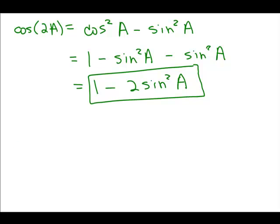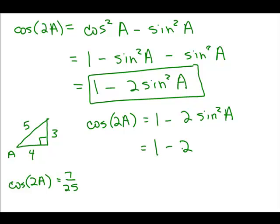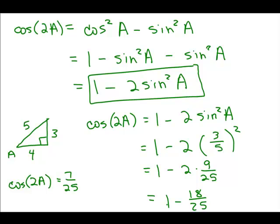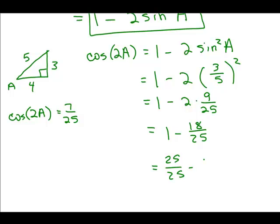Let's verify with that same triangle. We previously found that cosine of 2A was 7 over 25. Using the formula cosine of 2A equals 1 minus 2 sine squared A, the sine of A is 3 fifths, so we compute 1 minus 2 times (3 fifths) squared, which is 1 minus 2 times 9 over 25, equaling 1 minus 18 over 25. Writing 1 as 25 over 25, we again get 7 over 25.